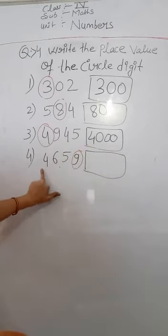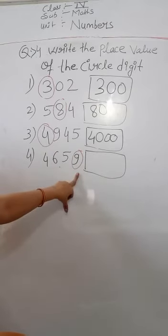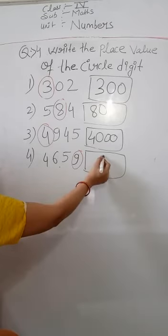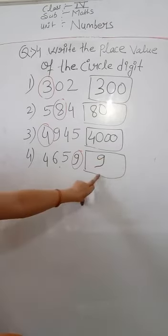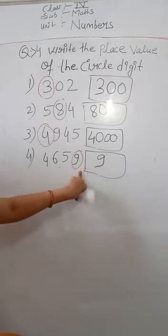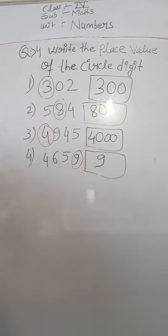The fourth number is 4659 and we have to find the place value of 9. Here is the place value of 9 — we only write 9, because after 9 there is no number. Clear? Everyone is clear?